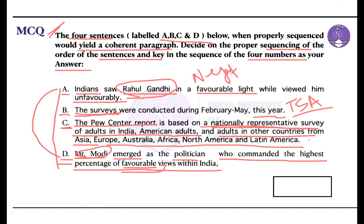Option C points out the Pew Center report is based on a nationally representative survey of adults in India and other countries. This introduces contextual information — it explains that the report's findings are derived from a comprehensive survey including responses from various demographics across different countries, including India and the United States. This information adds depth to understanding of the survey's scope and credibility.